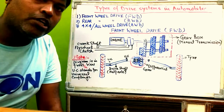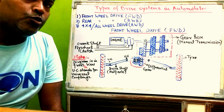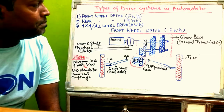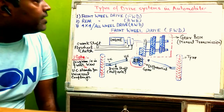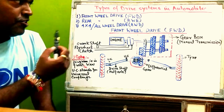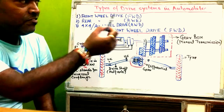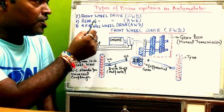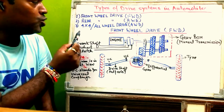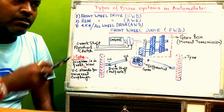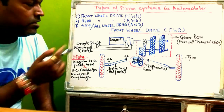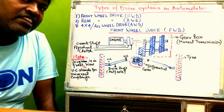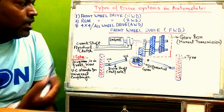Hello viewers, I am Vinay Kushwar and today I am going to explain different types of drive systems used in our automobiles. There are three types: front wheel drive system, also known as FWD; rear wheel drive system; and 4x4, which you may see written on the back of some vehicles — also called all wheel drive system.